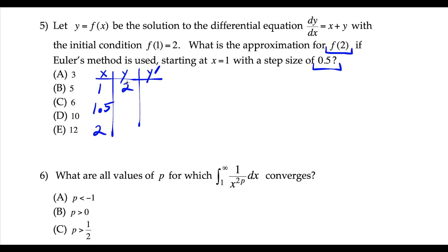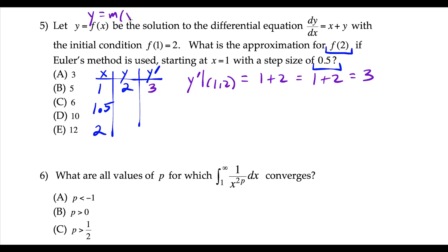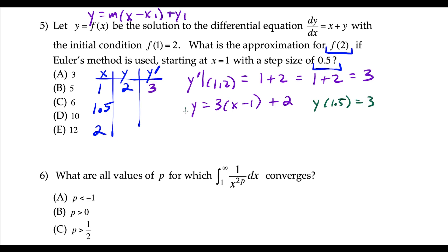The key is to find x, y, and the slope, then write the equation of a line. To find the slope, plug (1, 2) into the derivative: 1 plus 2 equals 3. Using the tangent line equation y equals m times (x minus x1) plus y1, with slope 3, we approximate y at x equals 1.5: 3 times (1.5 minus 1) plus 2 equals 1.5 plus 2, which is 3.5. That's our next y value.